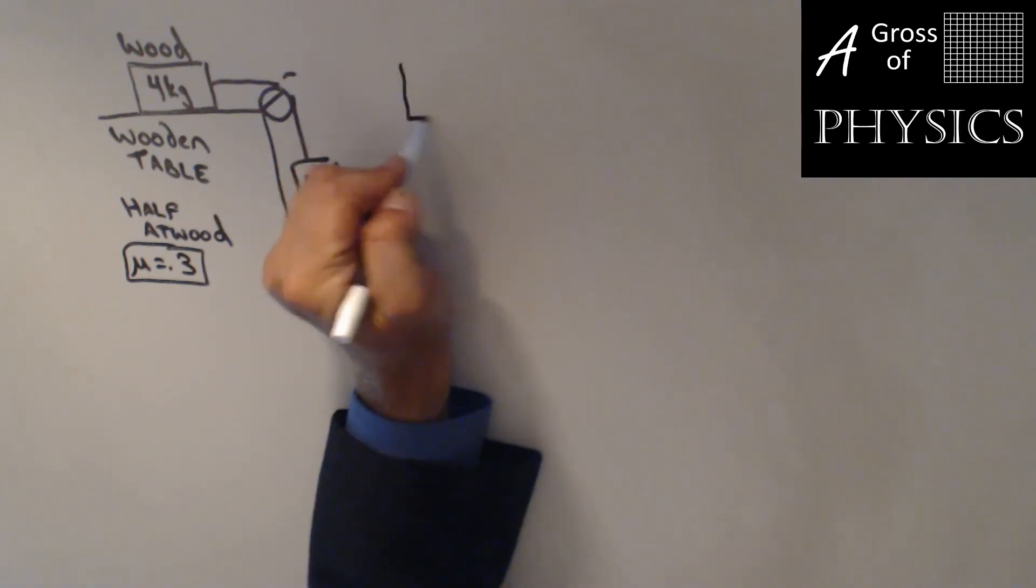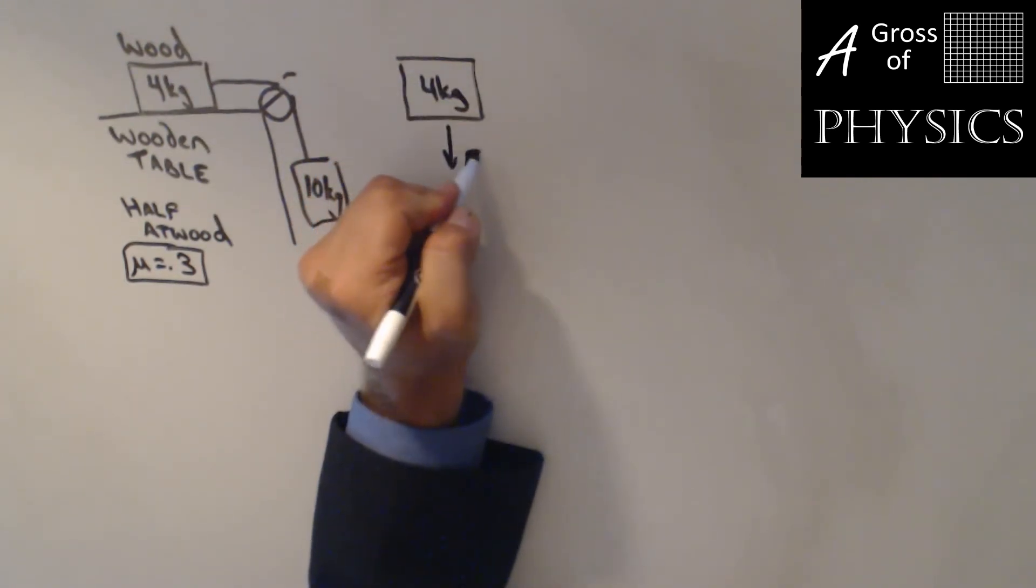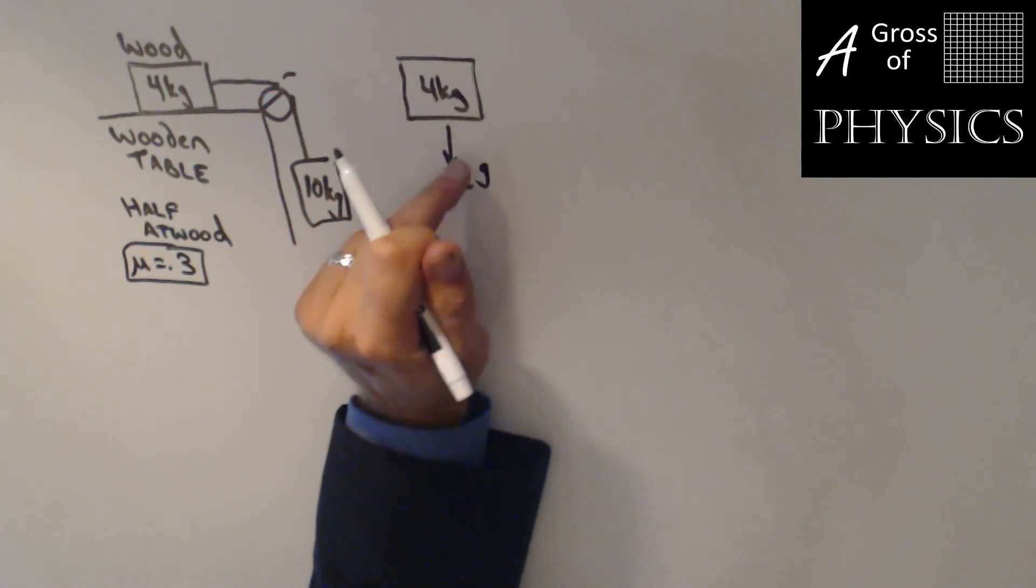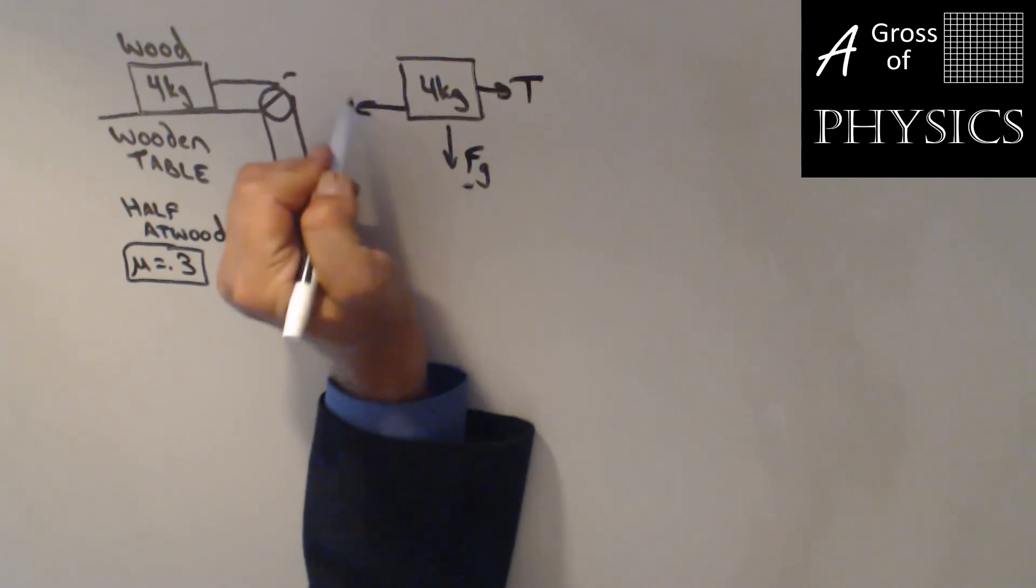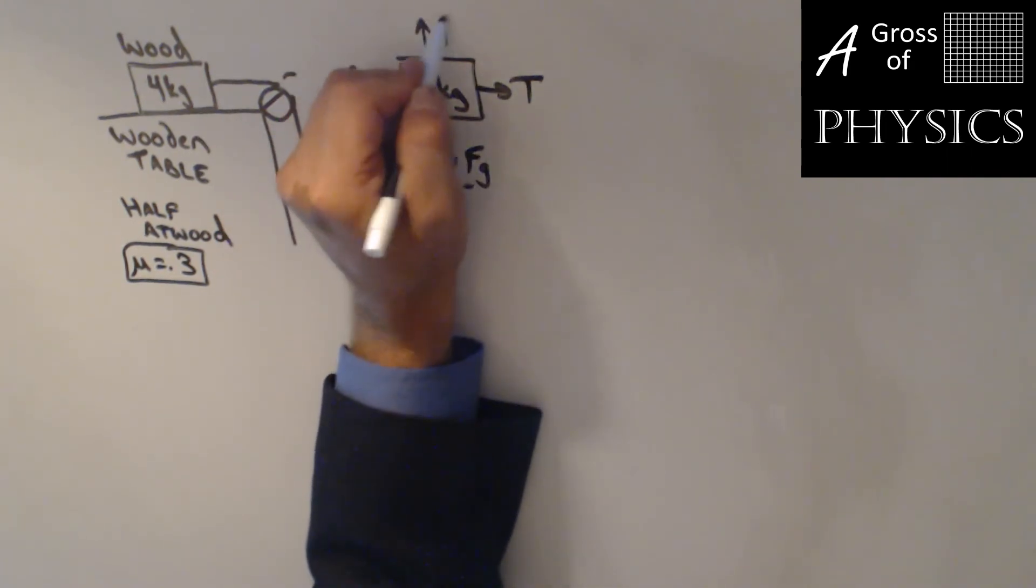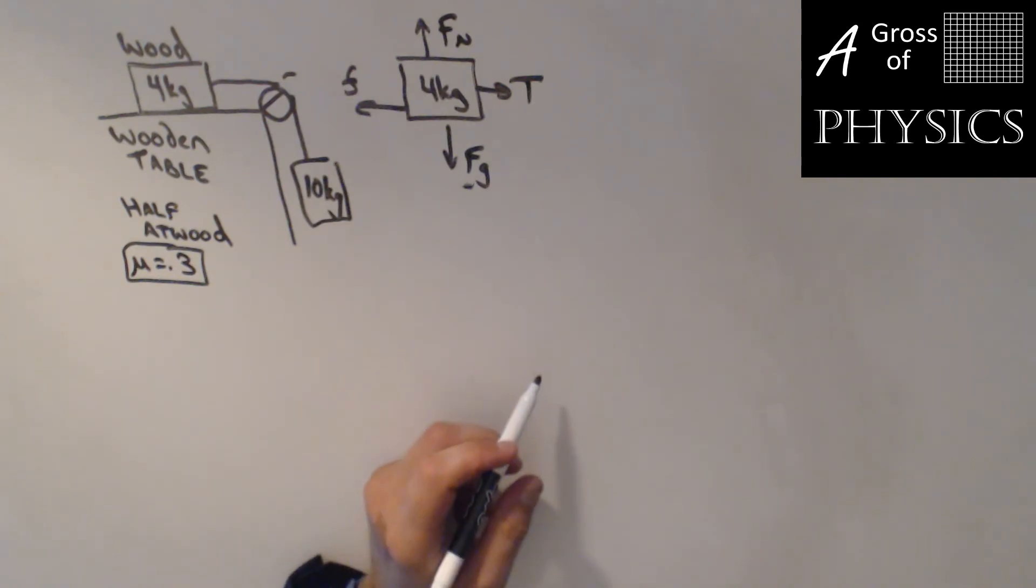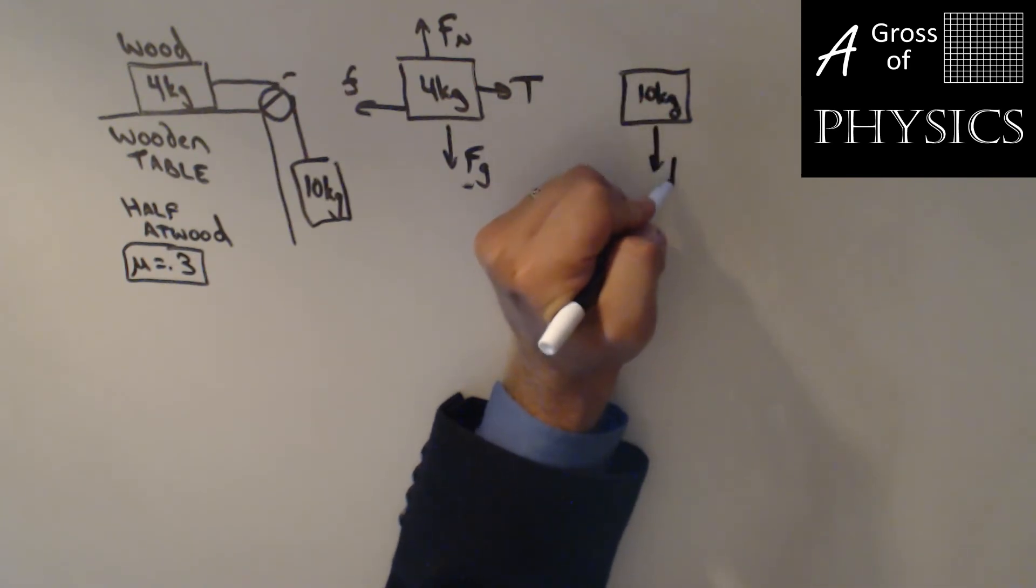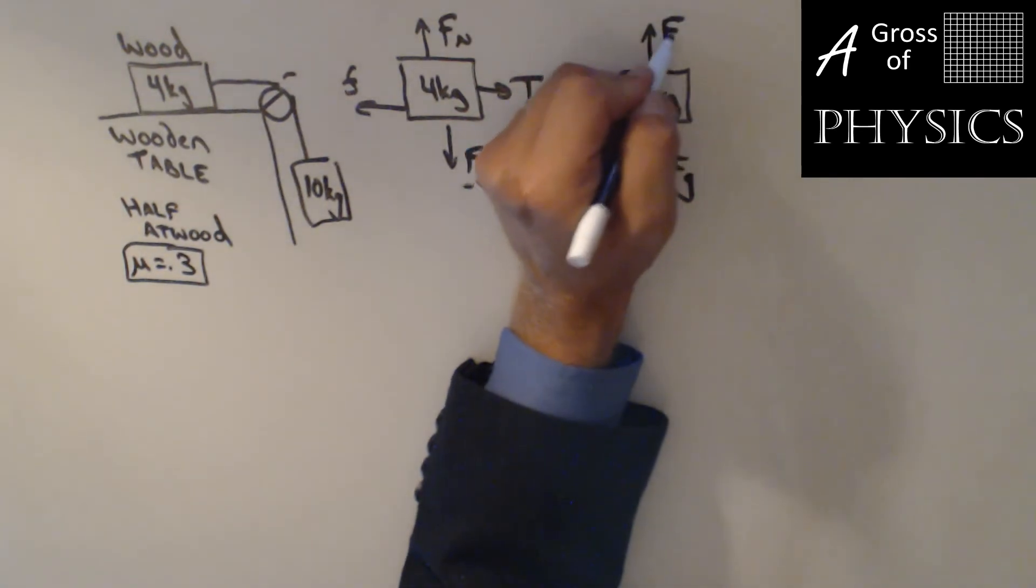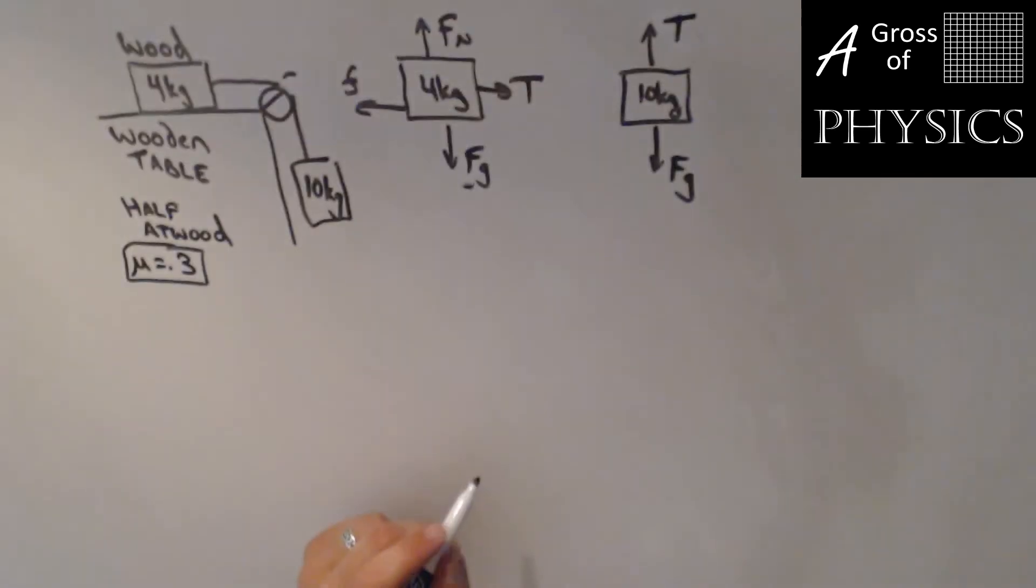I'm going to draw a free body diagram up top for my 4 kg mass, which involves gravity, tension in the rope, friction, and the normal force because it's resting on a surface. On the other hand, we have the 10 kg mass, which has gravity pulling down and tension pulling up, not on a surface. The tension in the rope is what's opposing its motion.